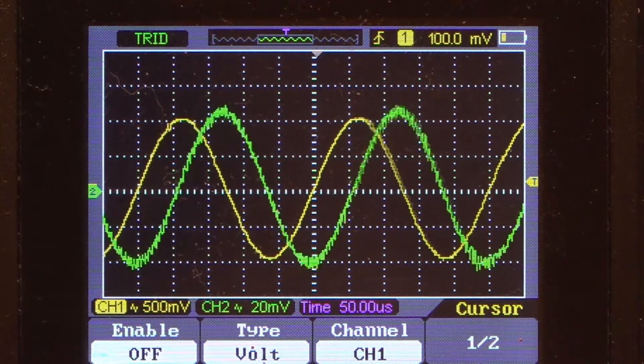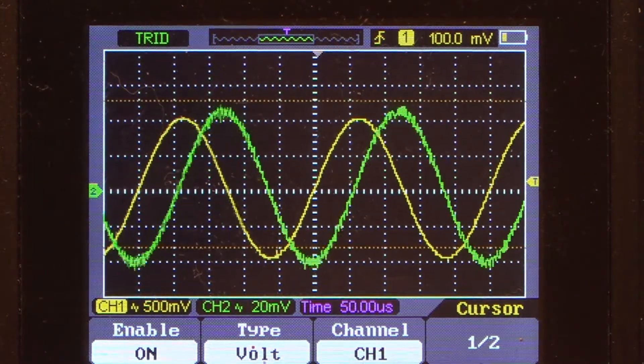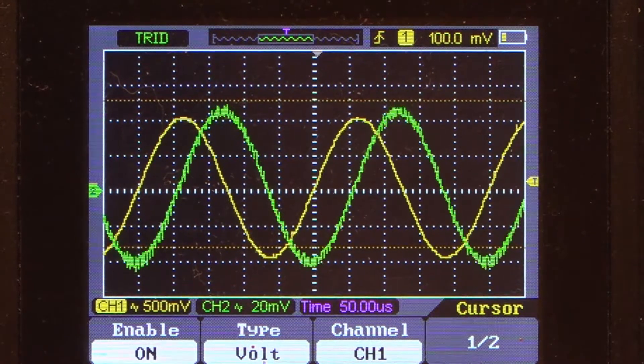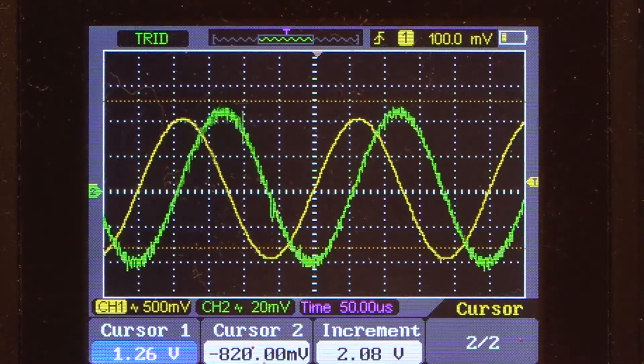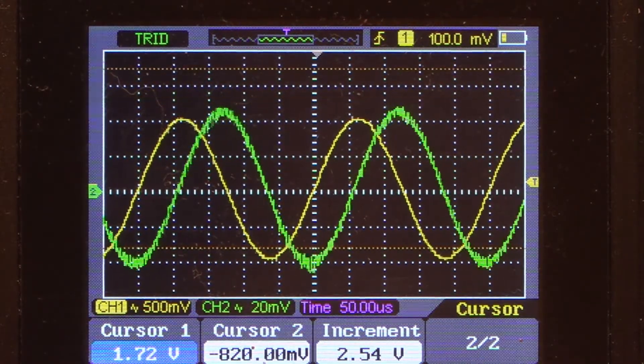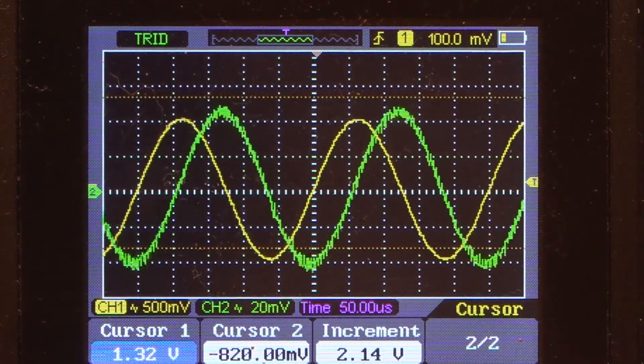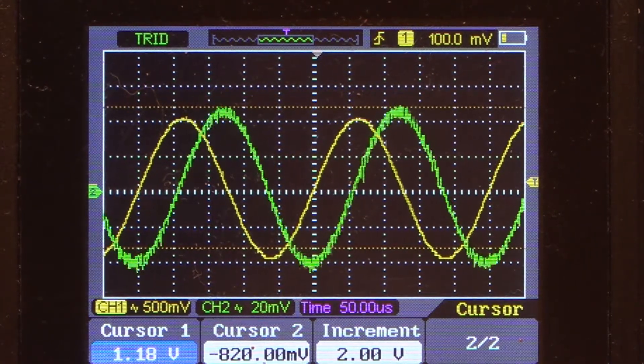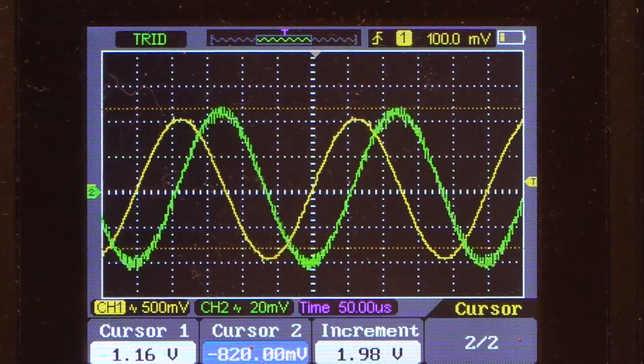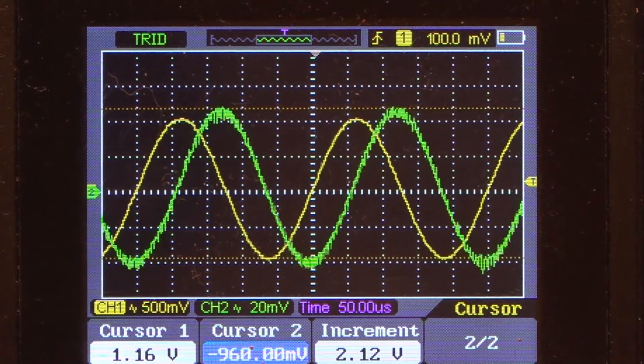So what this does is when we enable this, there you go, you'll see that I've got two dotted lines on the display now, both horizontal. If you go to page 2 you can select cursor 1 and you can move the top cursor up and down and then you slide over to cursor 2 and you can move that up and down.